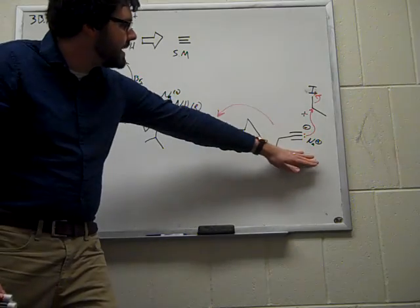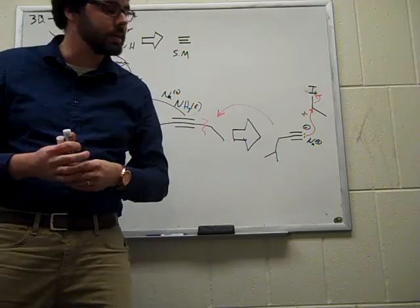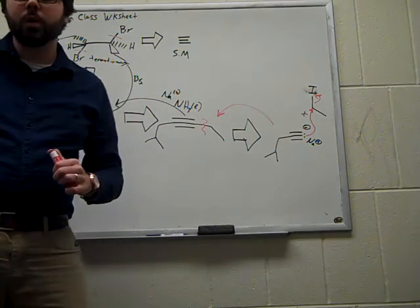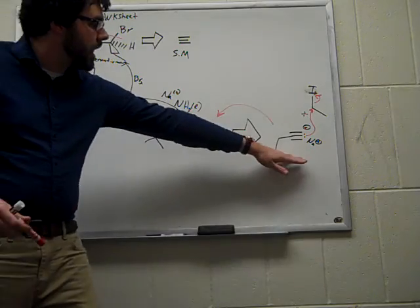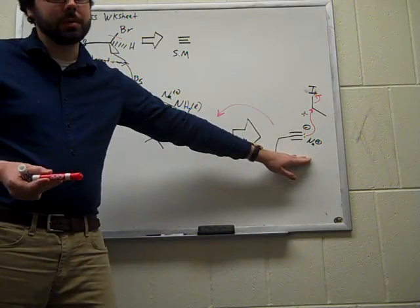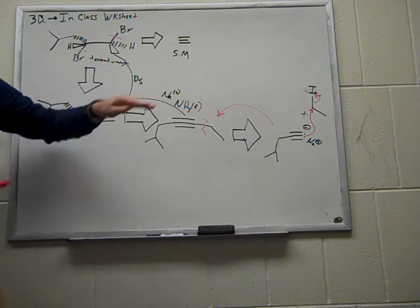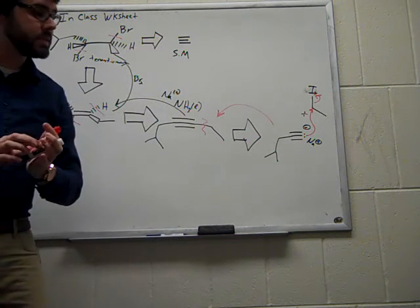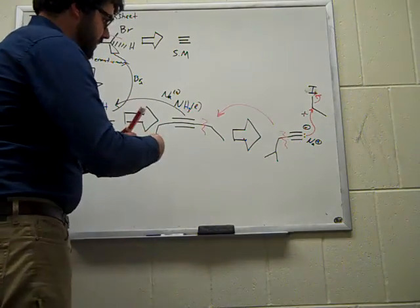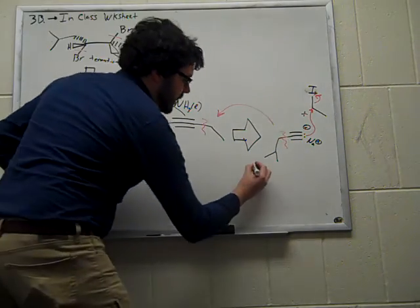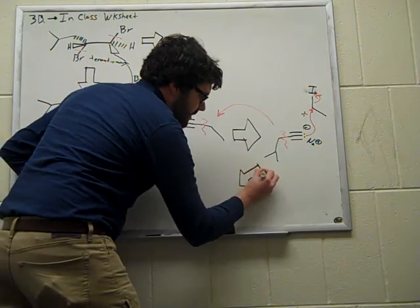And so in reality, we're not quite done yet in the retrosynthetic analysis of our product, namely for the fact that there's one more bond that we know how to make and for the fact that this alkyne here isn't actually our starting material. Rather, our starting material is acetylene or ethine. So let's go ahead and make this final disconnection. I'm going to draw this retrosynthetic arrow in a little bit of a diagonal manner to give us a little bit more room.